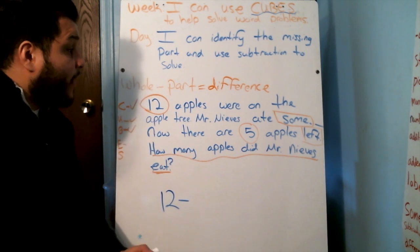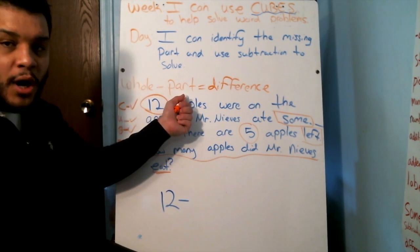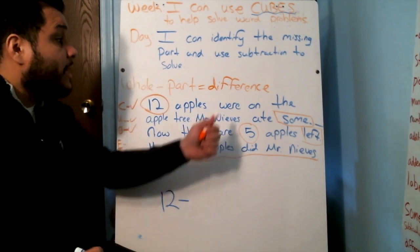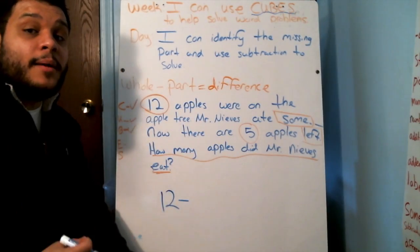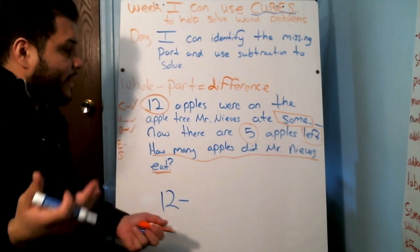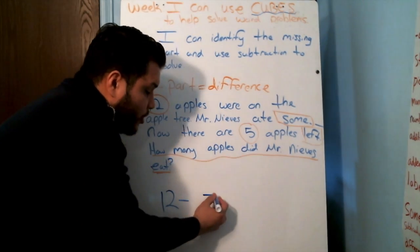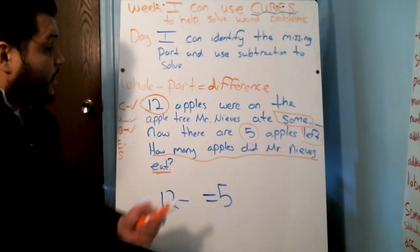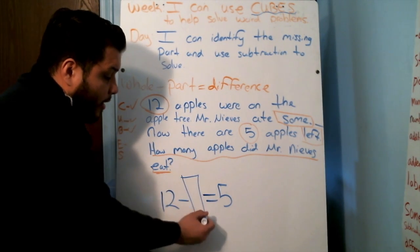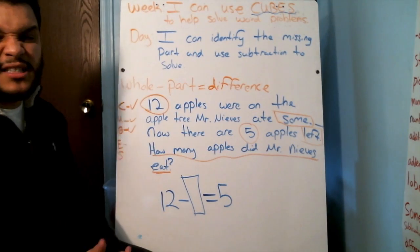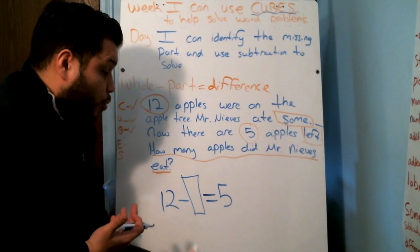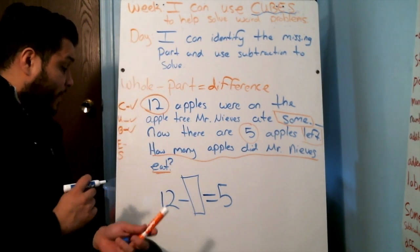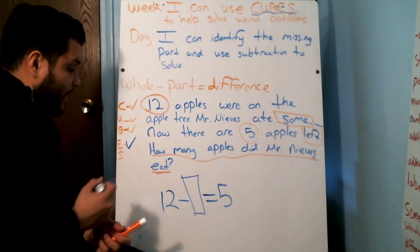Yesterday, when we were defining our words, we didn't say that part is what's left. Part is what we take away. Difference is the number that is left. Yeah, that's what's left over. So I know that my five needs to go where my difference is. So I'm looking for my part. My part must be that special word some. I don't know what that number is yet. But now we're going to identify it by solving. So we evaluated our problem. And now we want to solve.